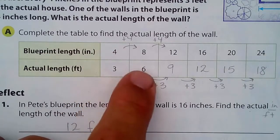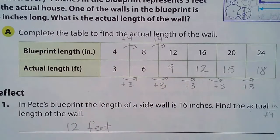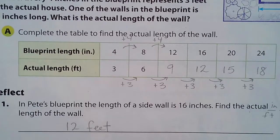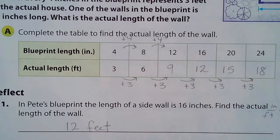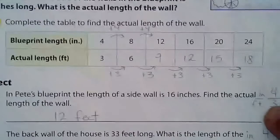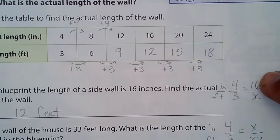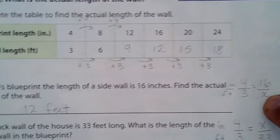In this blueprint, the sidewall is 16 inches long. So how many feet is that? We can look at our table — 16 inches is 12 feet. You could also see that four-thirds is our scale. Four times four is 16, so I'd have to multiply three times four, which gives our missing variable of 12.